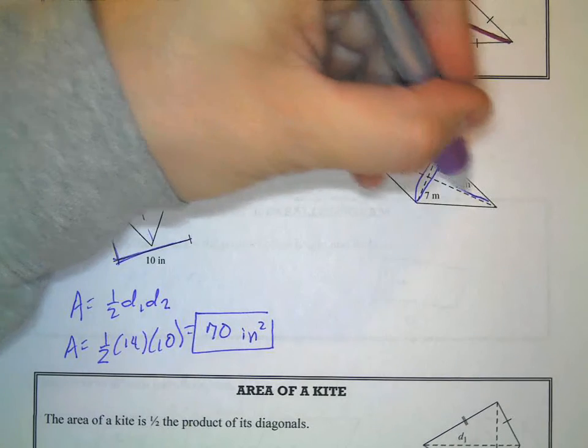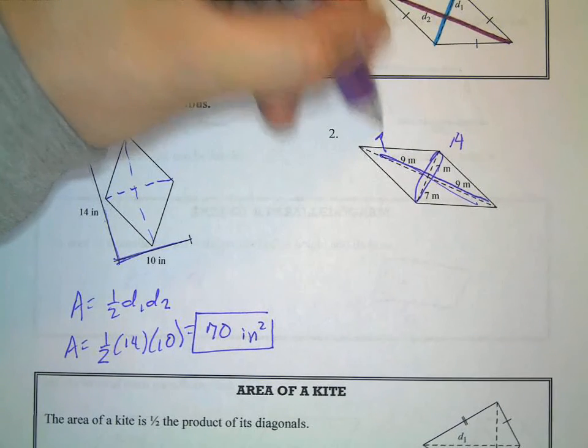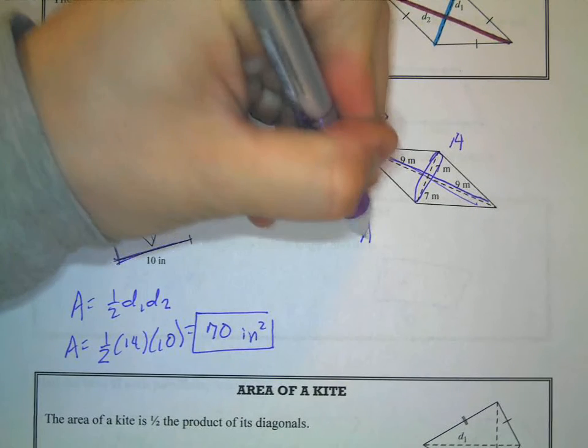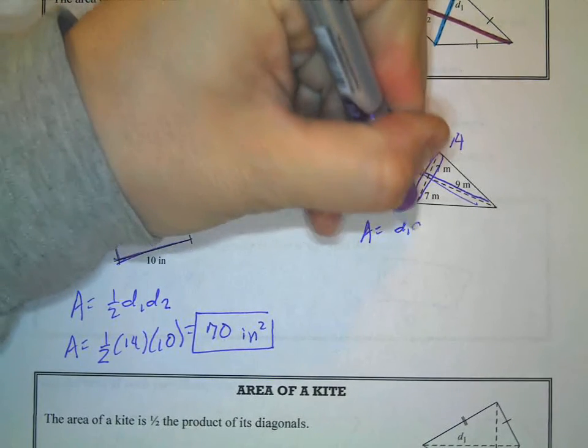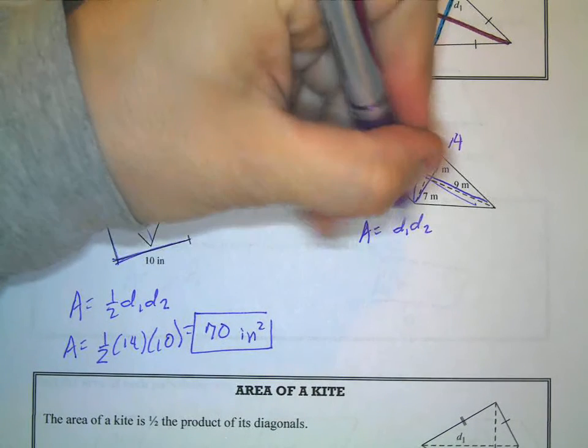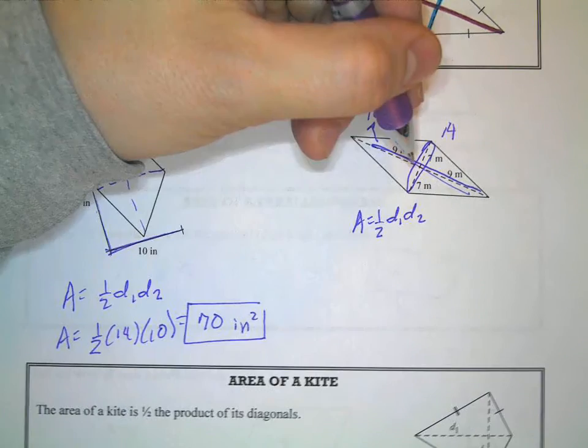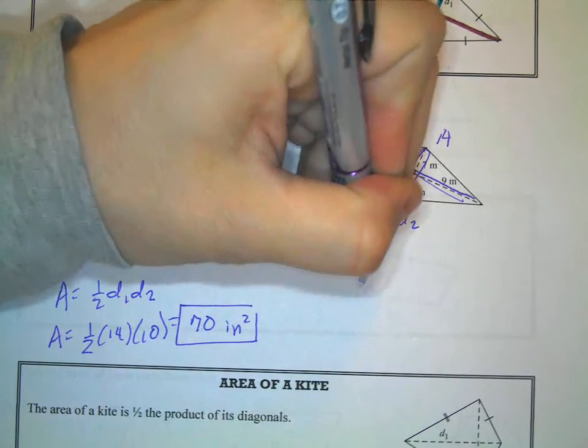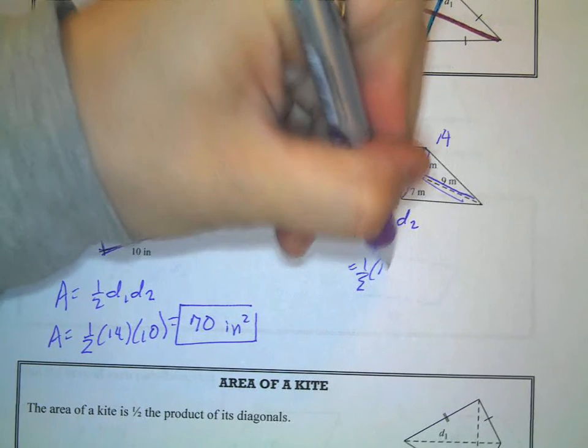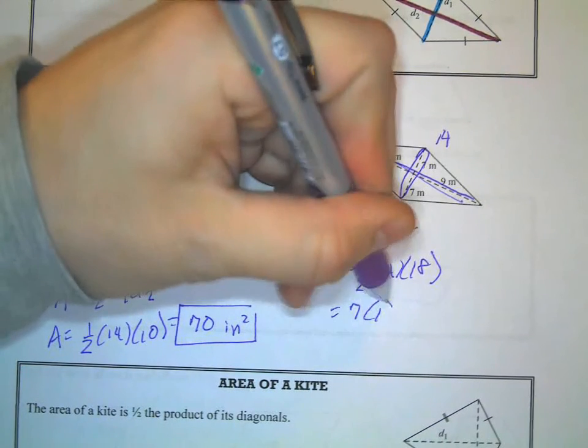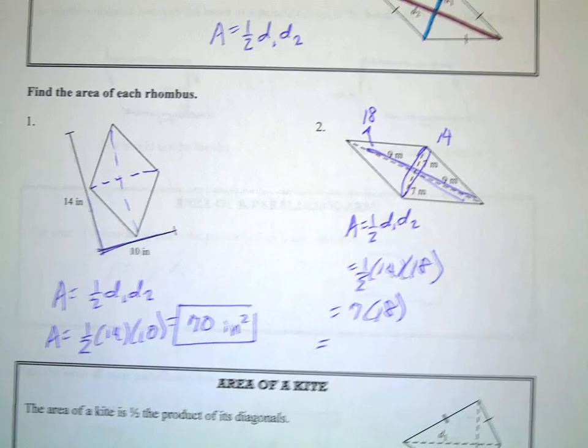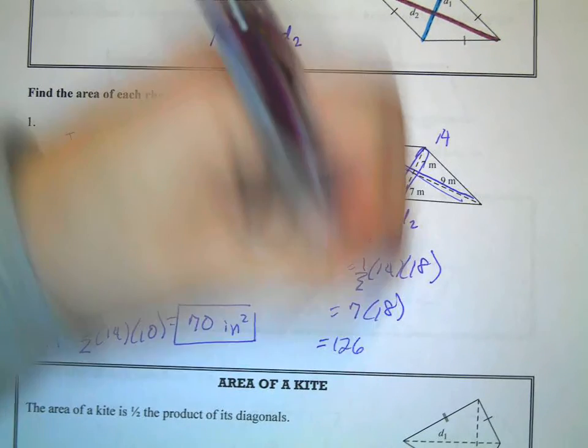So we have to do area equals D1, D2, 1/2 that, sorry. So 1/2 times 14 times 18. 7 times 18 is 126 square meters.